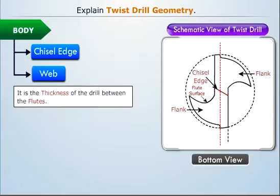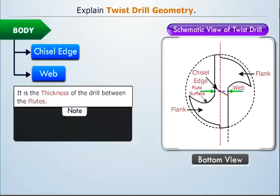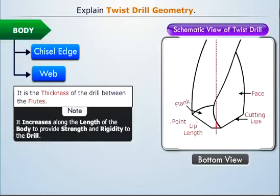The thickness of the drill between the flutes is called the web. Note that the size of the web increases along the length of the drill. This is done to provide strength and rigidity to the drill.